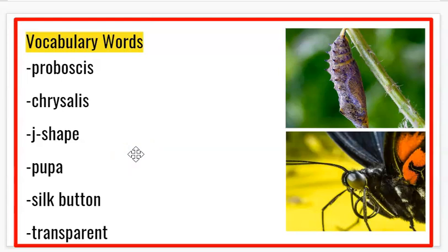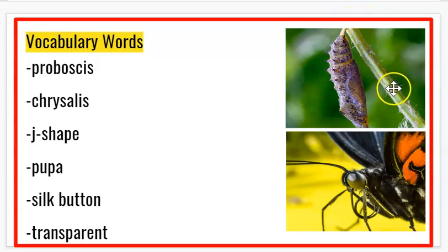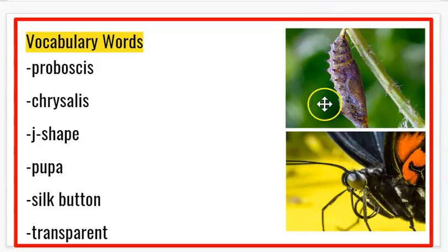Silk bottom — that's the anchor the caterpillar makes that allows it to hang upside down and stay attached while going through the chrysalis stage. This right here is the silk bottom. This is what the caterpillar makes — it attaches itself to a leaf or a branch, this becomes hard, and then it allows it to hang.